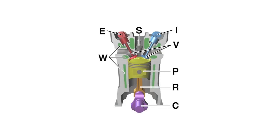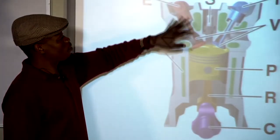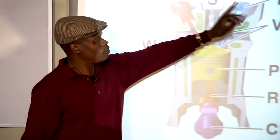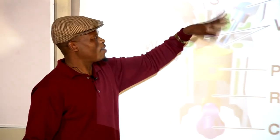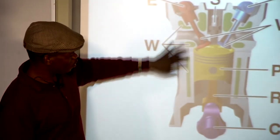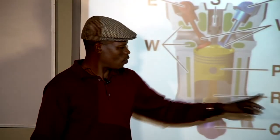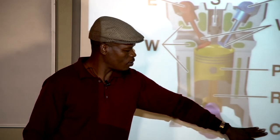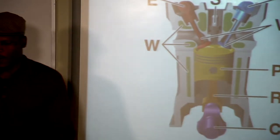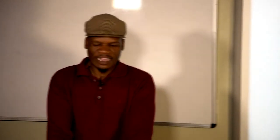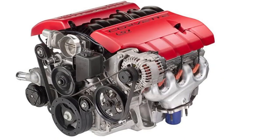Looking at a diagram of the engine, you can identify: the exhaust port, the inlet port or inlet valve, the spark plug, the water jackets, the piston, the connecting rod, and the crankshaft with the end bearings — the smaller one and the bigger one. At this stage, looking at the engine, you should no longer be frightened, because you can now relate these components and know exactly what is happening inside that engine.